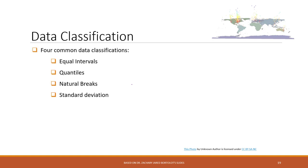There are four types of data classifications commonly used. In ArcGIS Pro we have more than those four, but those four are the most commonly used. We have equal interval, quantile, natural breaks, and standard deviations. And in most cases, you can also manually classify your data.